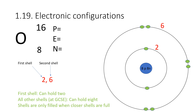For point 1.19 you need to be able to deduce the electronic configurations of the first 20 elements in the periodic table. If you recall from a previous video on atomic structure, every atom has protons, electrons and neutrons, and we can figure out how many there are by using the atomic number and the mass number. The atomic number tells us how many protons we have — for oxygen that's eight — and also how many electrons there are. For electronic configurations we're just interested in the number of electrons, so we apply three rules: the first shell can only ever hold two electrons; subsequent shells at GCSE can hold up to eight; and subsequent shells are only filled when the closer shells are full.